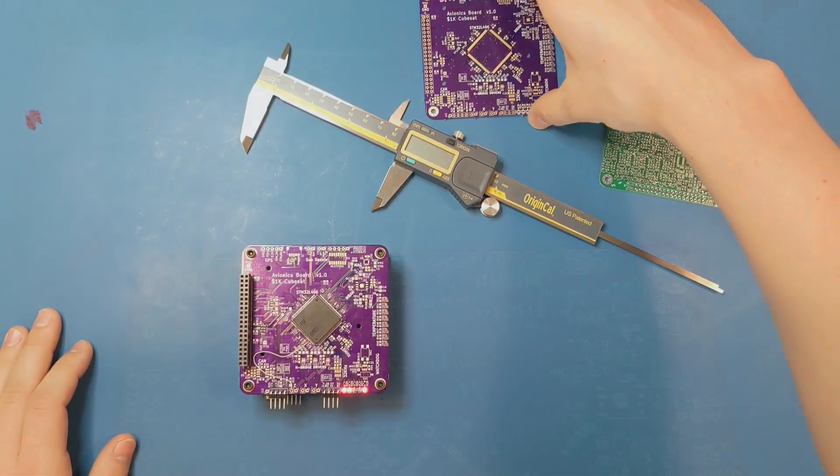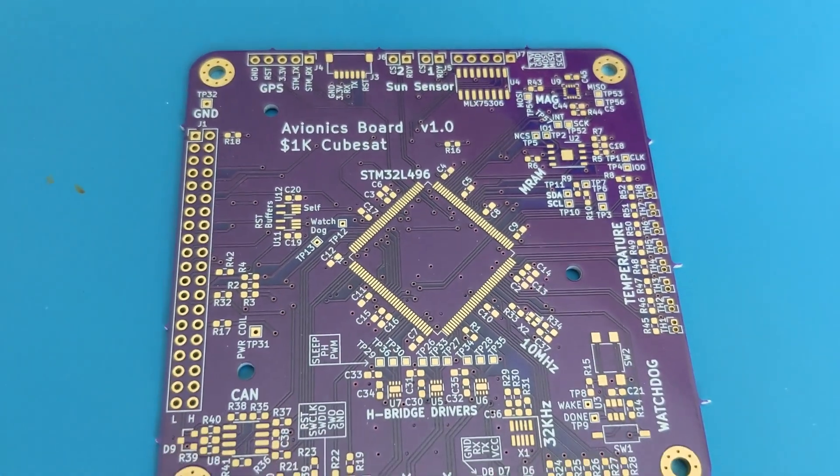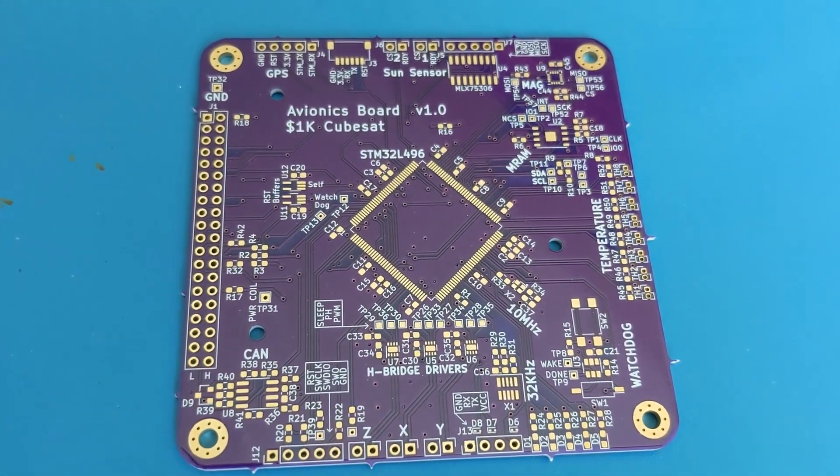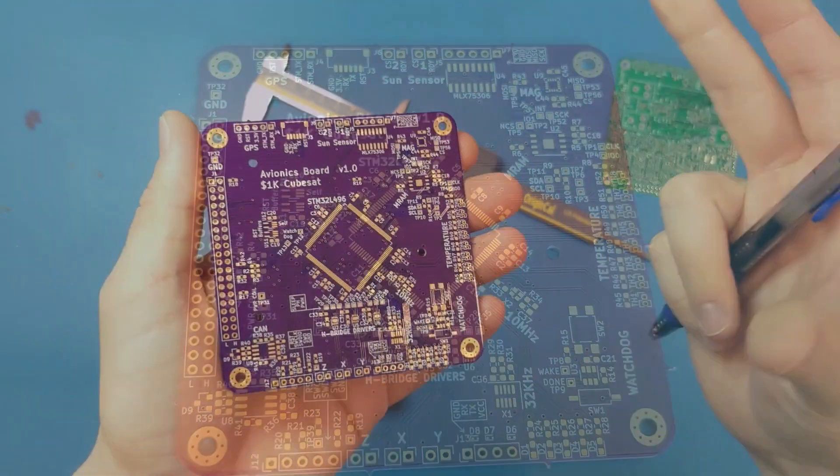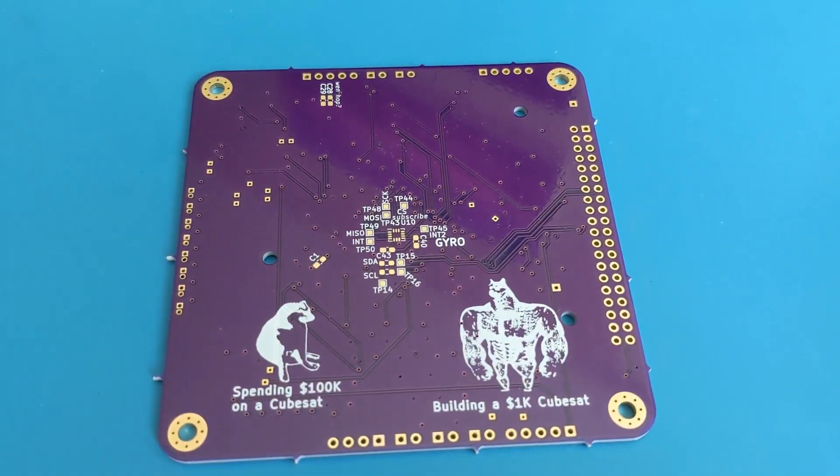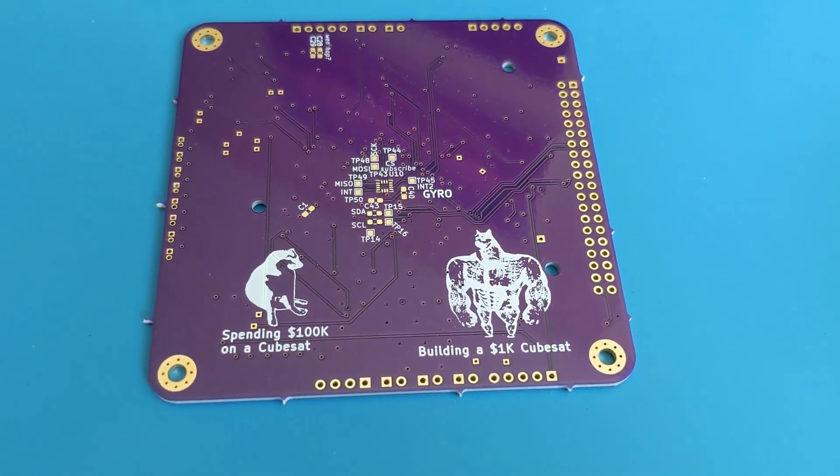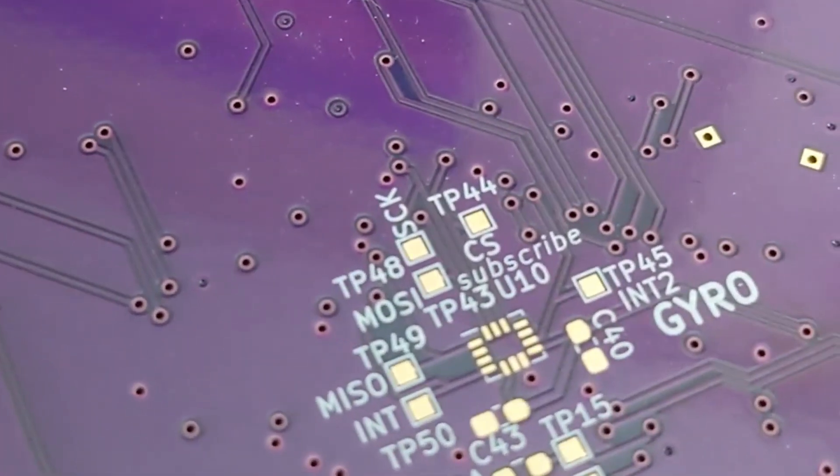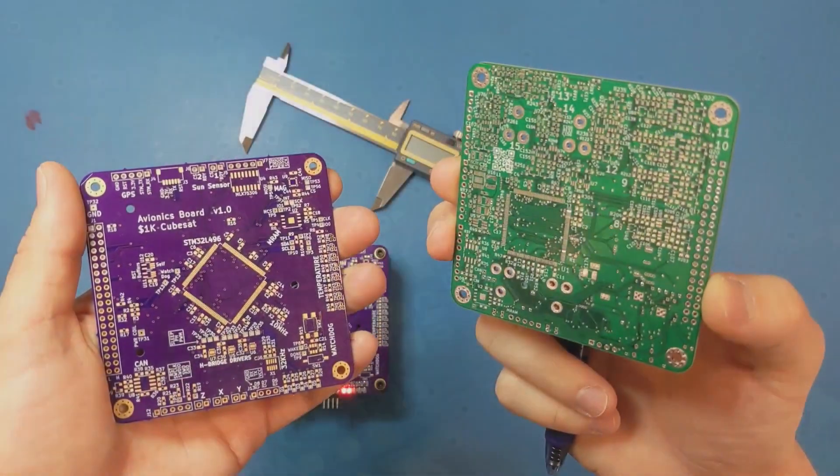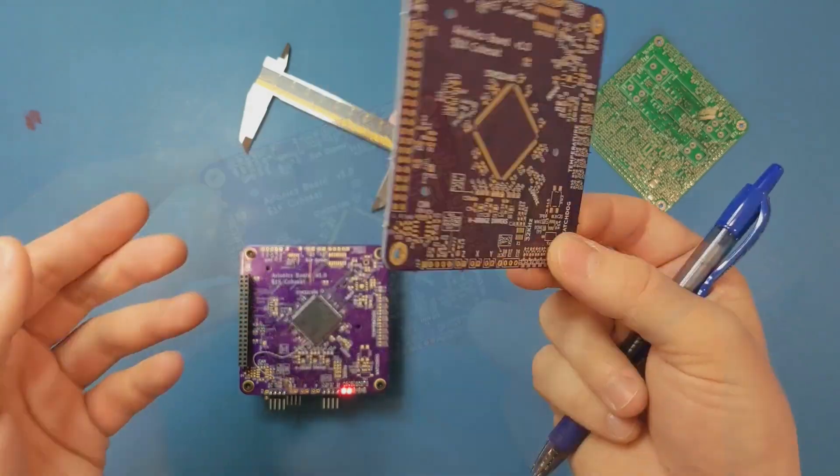But first, I do want to talk about this shiny new purple Avionics board. And as always, you can find the design files for this linked in the description below on my GitHub page. It's a four layer board that I had made at OSH Park. And while it costs a bit more than the green EPS board that I had manufactured at PCBWay, I really like the quality of these OSH Park boards.